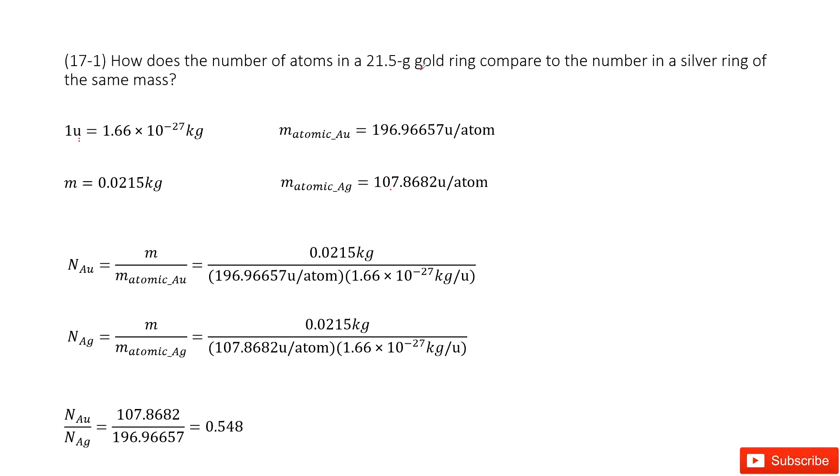Now you can see, for the gold ring, the total mass is given, and the mass for one gold atom is given. Can you find how many atoms?